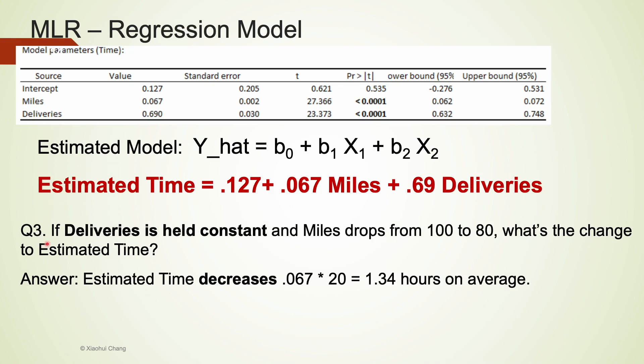Question 3: If deliveries is held constant and miles drop from 100 to 80, what's the change to estimated time? This time, we fix deliveries and change miles. Miles decreases from 100 miles to 80 miles, that's 20 units decrease. So 20 units decrease in miles would lead to 0.067 multiplied by 20 equals to 1.34 hours decrease in time on average.